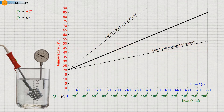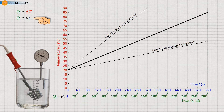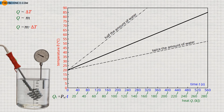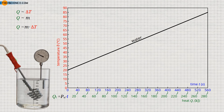The evaluation of the experiments thus shows that the amount of heat is proportional to the desired temperature change as well as proportional to the heating mass. Therefore, the required heat is proportional to the product of mass and temperature change. This relationship applies not only to water, but within certain limits ultimately to any substance.